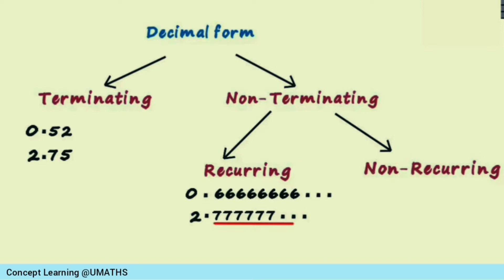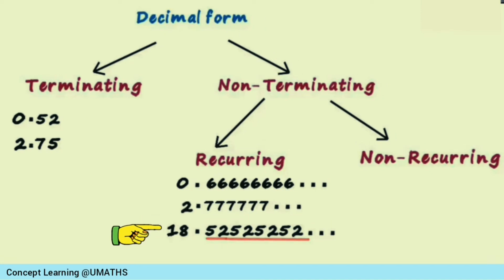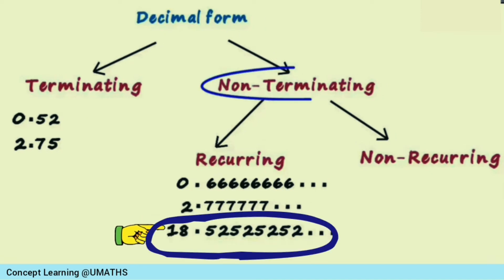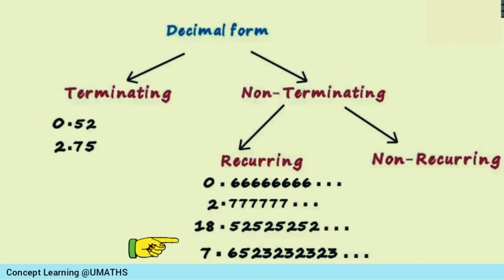You must be thinking only one digit repeating means recurring — no. Let us take another example: 18.52525252... Here, 5 2 is repeated indefinitely. Since it is not ending and is repeating, it is called a non-terminating recurring decimal.